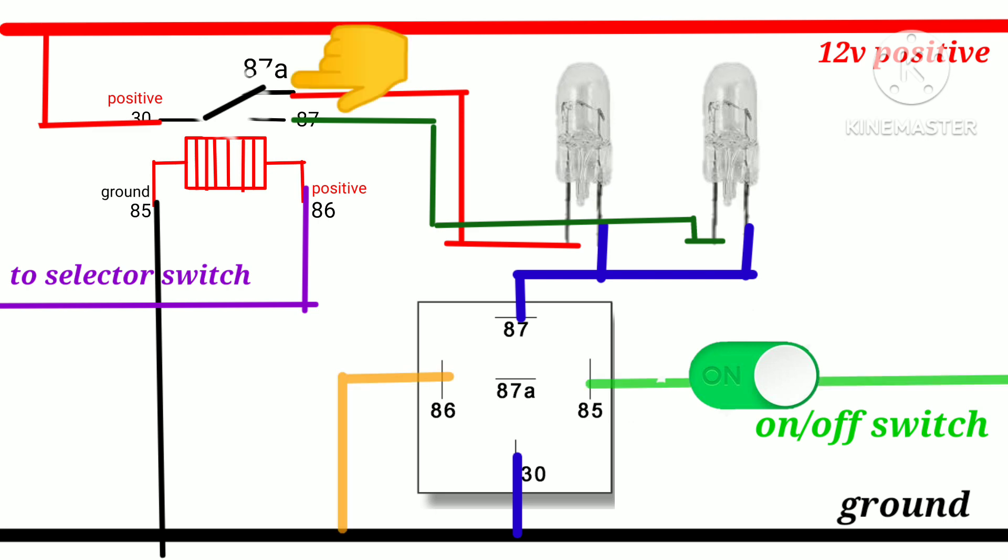When relay is off, the current flows to number 87a from number 30 of a relay. Look the transition of 87a when we turn on the relay.